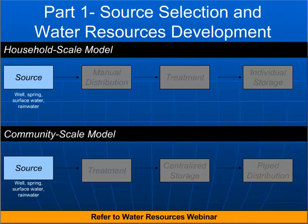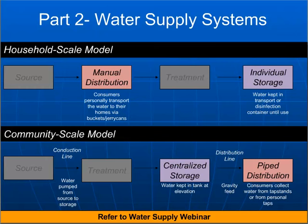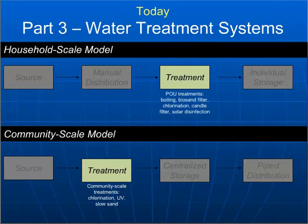In part one of this webinar series, we primarily talked about the source — characterizing the demand, talking to communities, figuring out how much water they'll be using daily and for what purpose, potable or non-potable. In part two, our big plumbing discussion, we talked mainly about the community scale model — the conduction line, distribution system, storage tanks, and calculations for a gravity-fed water supply system. Today we focus on water treatment, distinguishing between household scale and community scale.